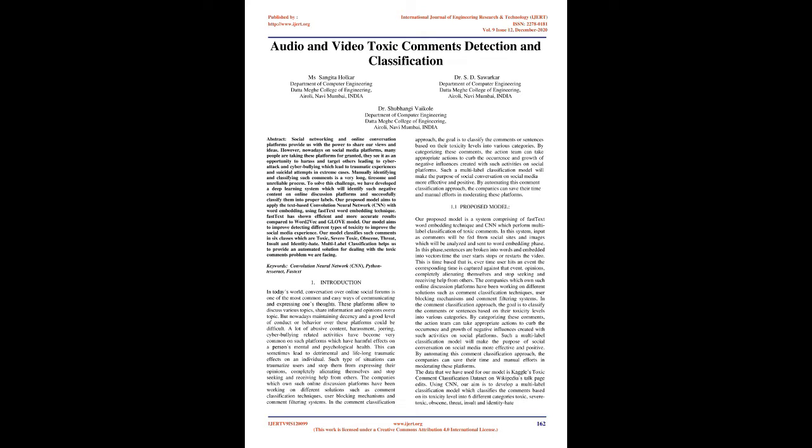To solve this challenge, we have developed a deep learning system which will identify such negative content on online discussion platforms and successfully classify them into proper labels. Our proposed model aims to apply the text-based Convolution Neural Network (CNN) with word embedding, using FastText word embedding technique. FastText has shown efficient and more accurate results compared to Word2Vec and GloVe model. Our model aims to improve detecting different types of toxicity to improve the social media experience.